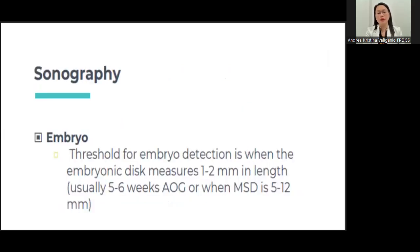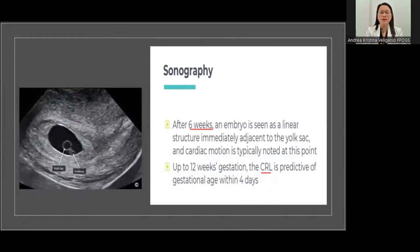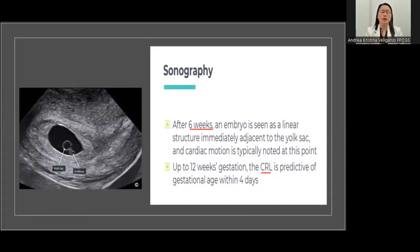On sonography, you will see an embryo. The threshold for embryo detection is when you see an embryonic disc measuring around 1 to 2 millimeters in length, usually appreciated around 5 to 6 weeks age of gestation, or when the mean sac diameter on ultrasound is around 5 to 12 millimeters. At 6 weeks, you will see a fetal heartbeat — the embryo will be seen adjacent to the yolk sac, and fetal cardiac activity will be perceived. If you do not see this, you may be dealing with a possible failed pregnancy, and you should evaluate two weeks after. Up to 12 weeks, the crown-rump length is very reliable for estimating gestational age, with a discrepancy of around 4 to 7 days — much smaller than later-pregnancy ultrasound evaluation, which can have a discrepancy of 7 to 14 days.